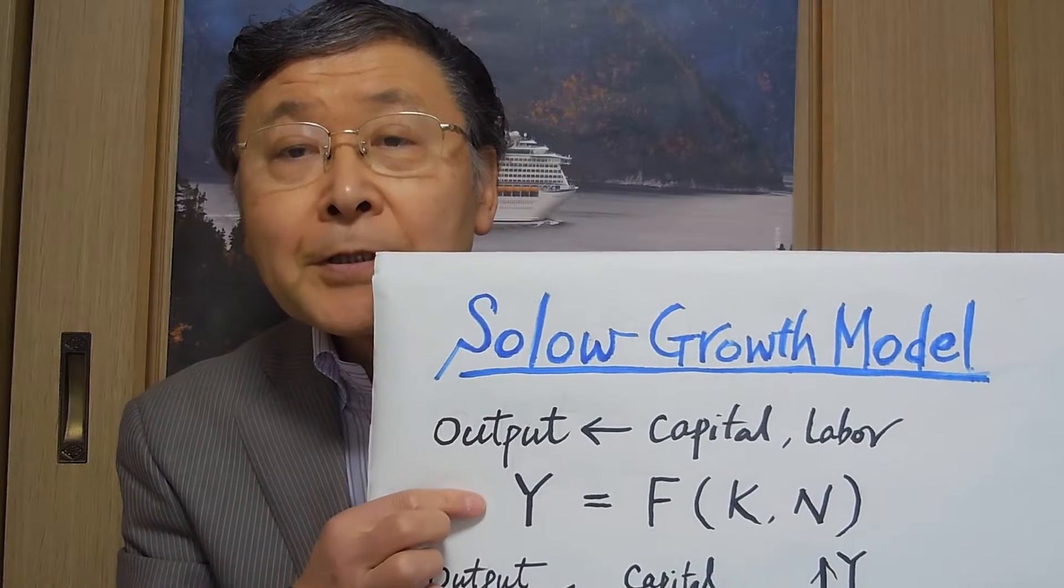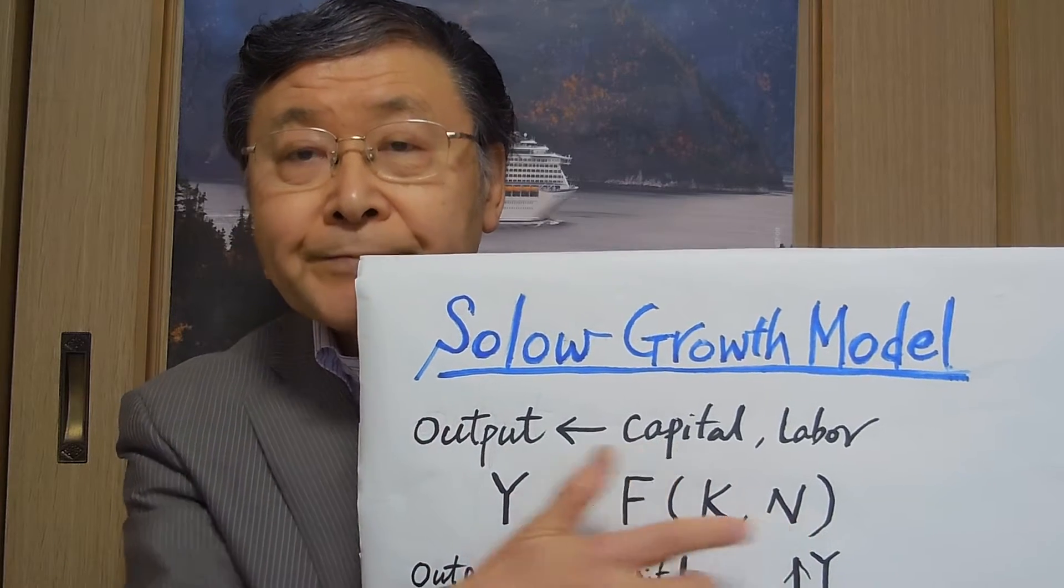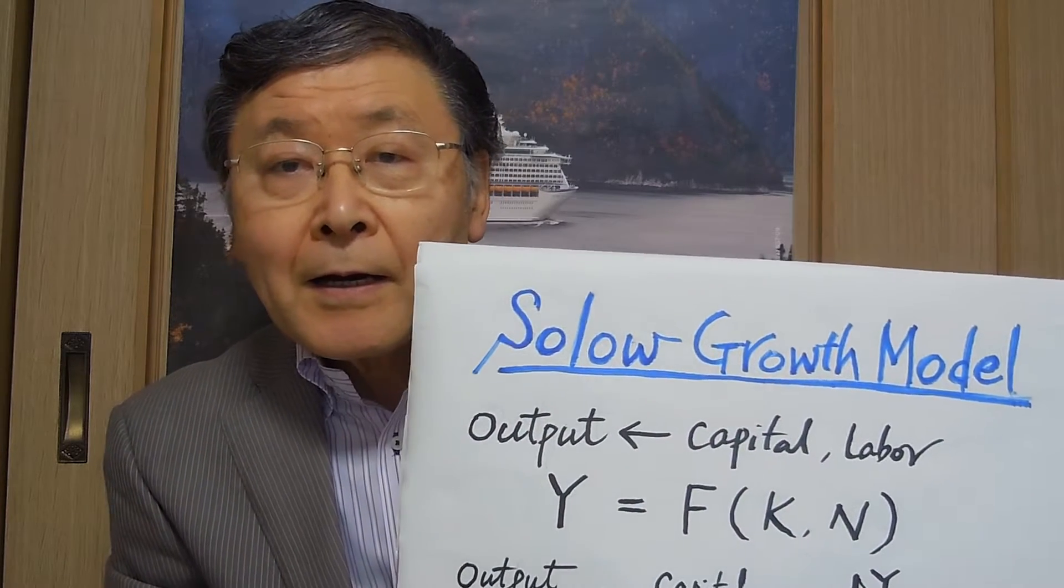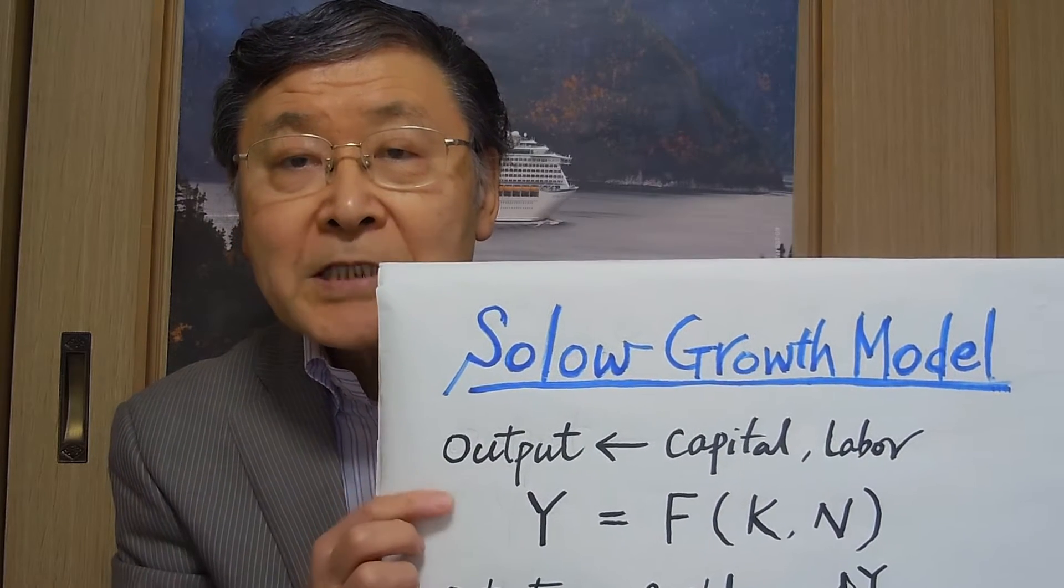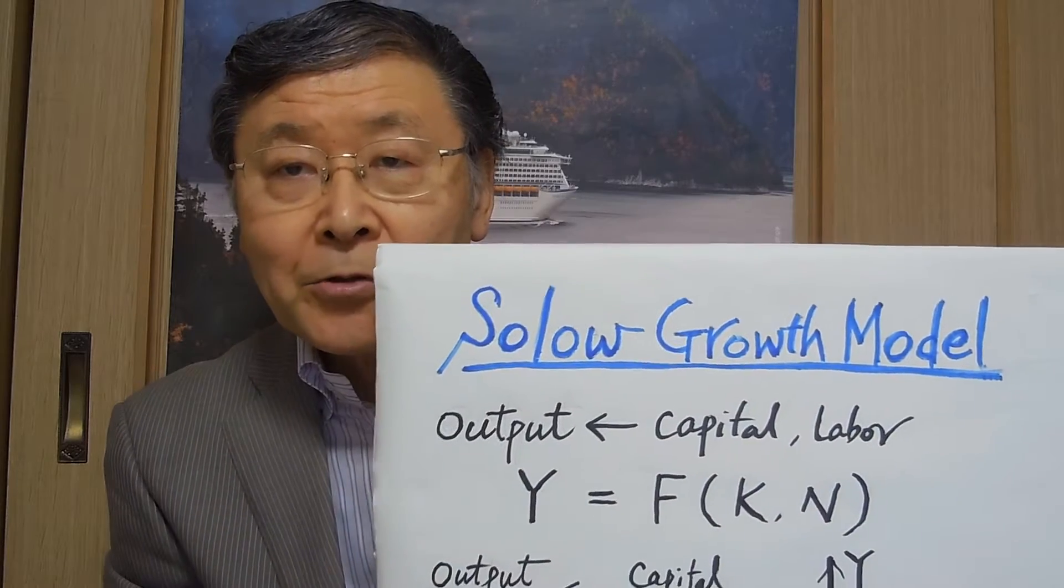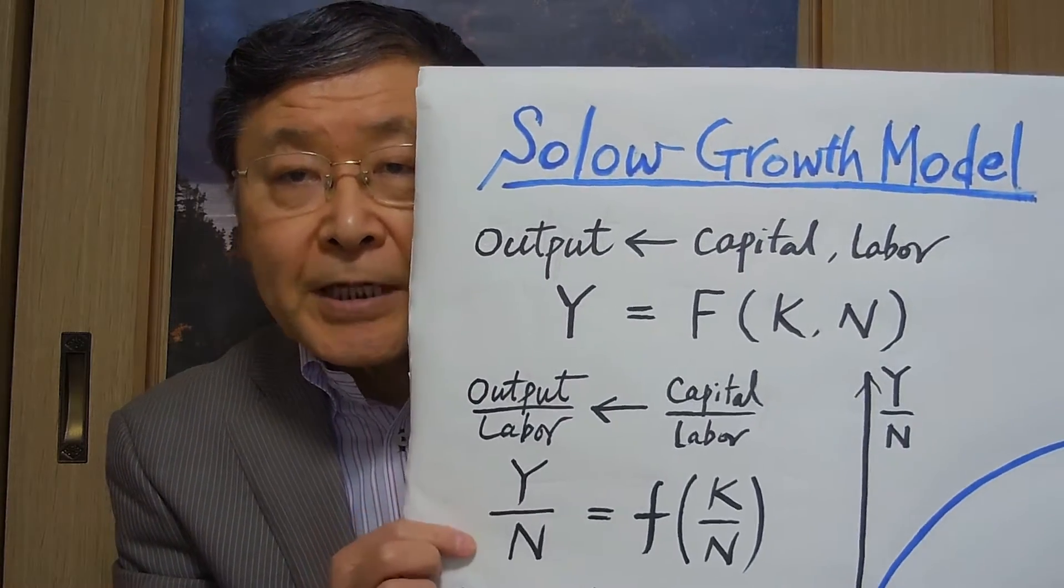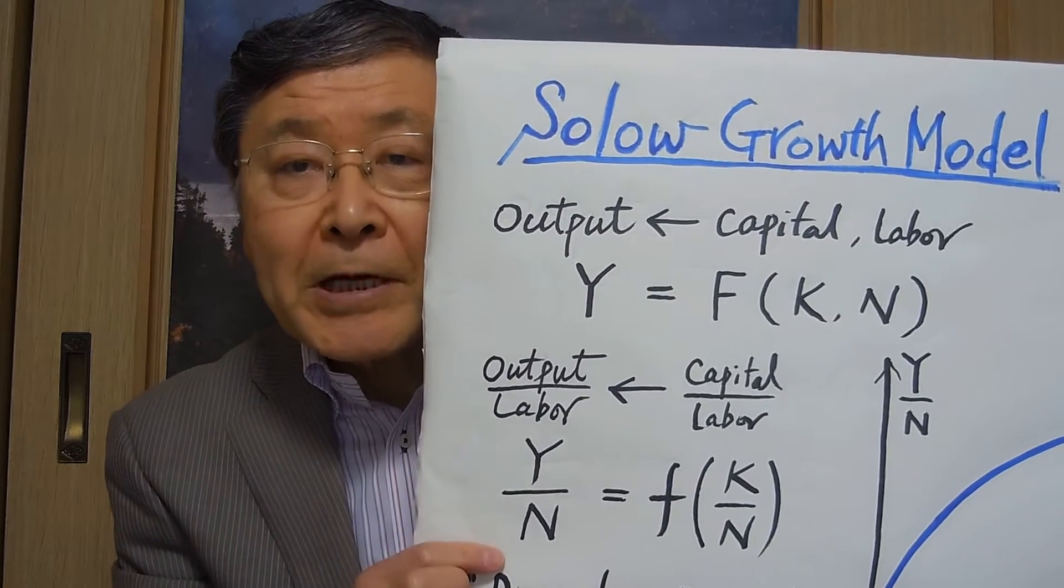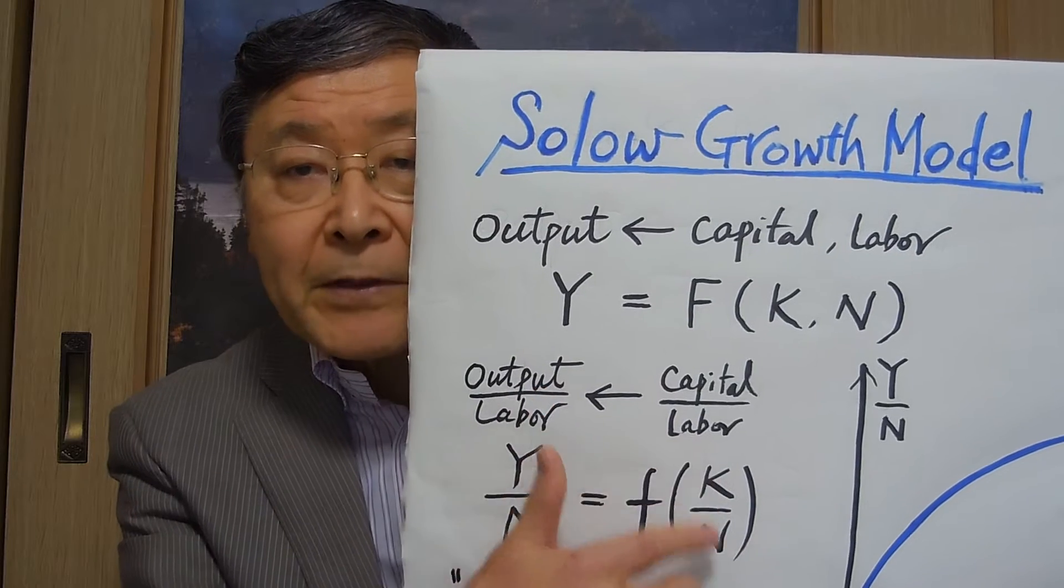So, output is a function of capital and labor. It is assumed that we can divide both sides of the equation by N, the total labor force, to come up with this relation. Output-labor ratio is a function of capital-labor ratio.